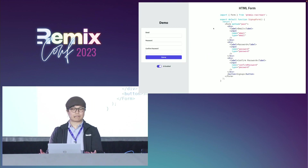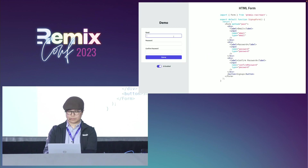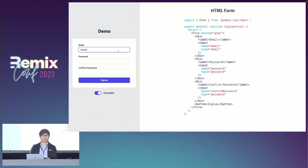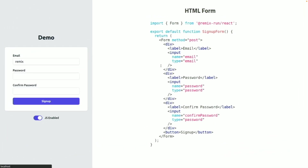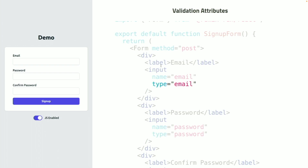Let's say we're building a simple sign-up form, and this is how the form looks like. Now, if we type 'remix' here and submit, what will happen? Well, the browser blocks the form submission and tells us the email is invalid, because the email type here is one of the validation attributes.